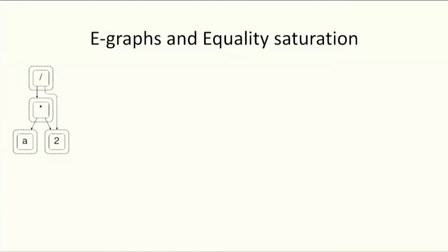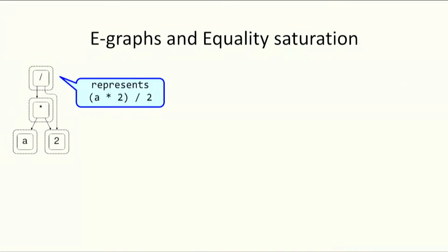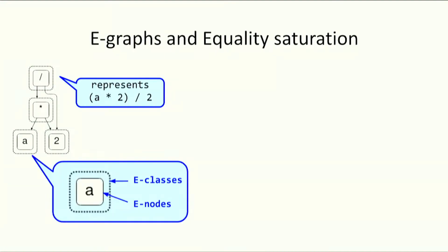At the core of equality saturation is a data structure called eGraphs. This example eGraph represents A times two over two. The dotted boxes are eClasses and the solid boxes are eNodes. Each eClass contains a set of eNodes, and each eNode has zero or more eClasses as children. This eClass contains a single eNode A, which has zero children. The times and division operators have two children eClasses.